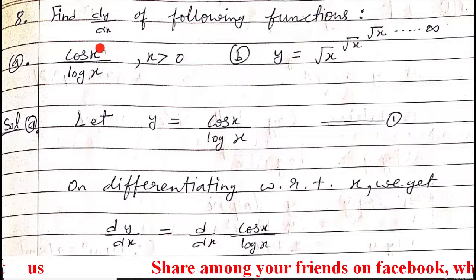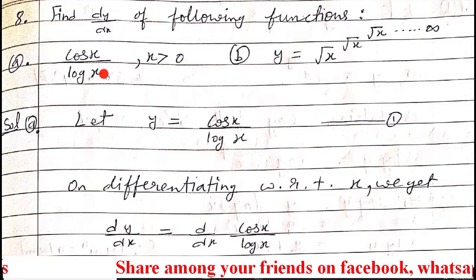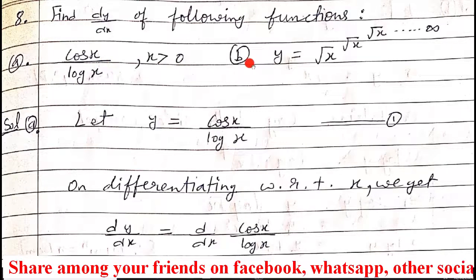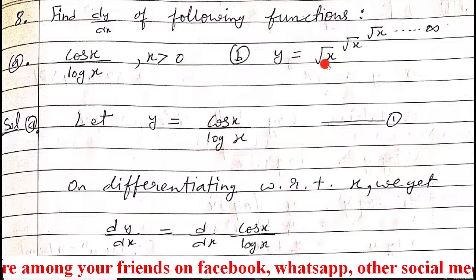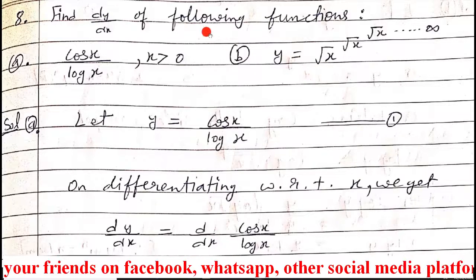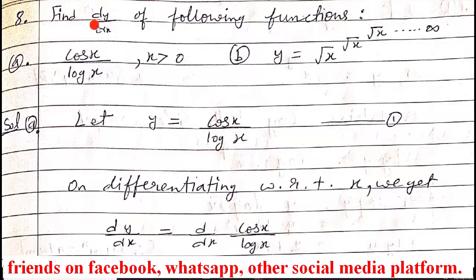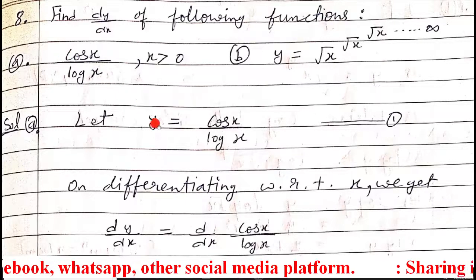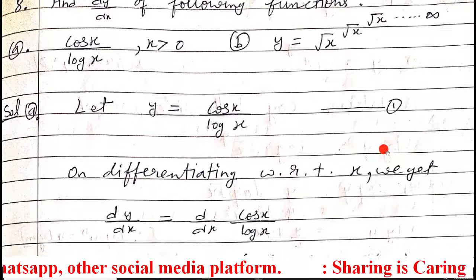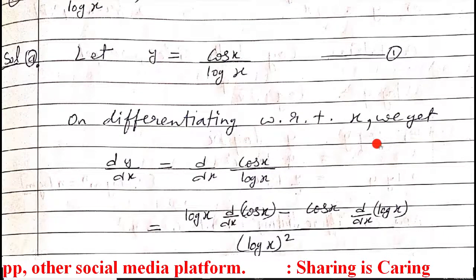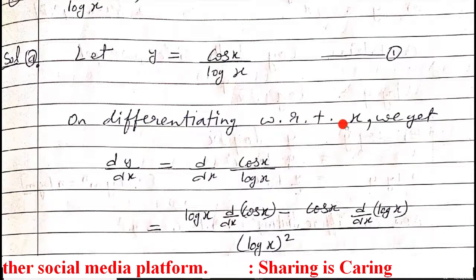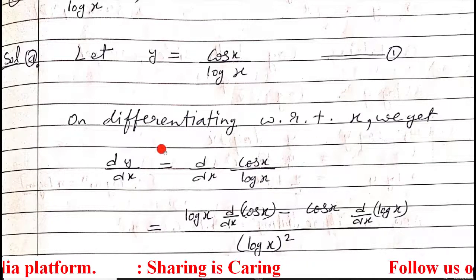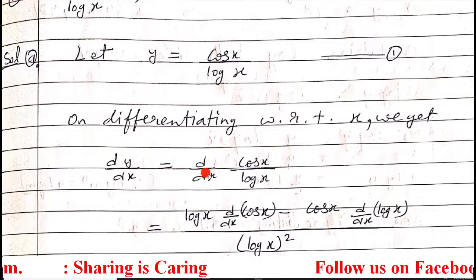The first function (part a) is cos x upon log x, where x is greater than 0. We will start with part a. Since we want dy/dx, I assume this complete given function as y — that is equation 1. Now, since we have to differentiate, I differentiate it with respect to x.